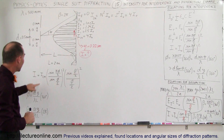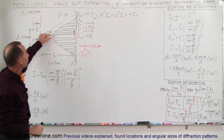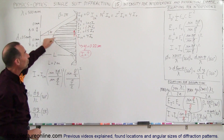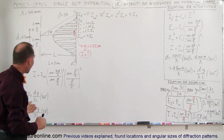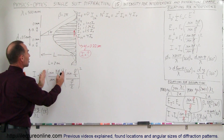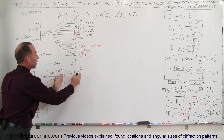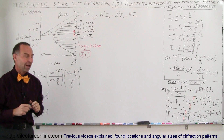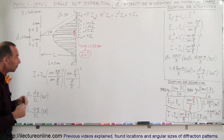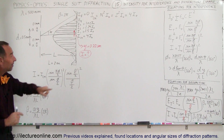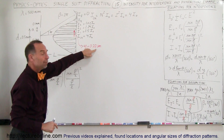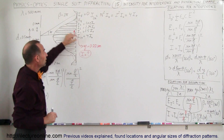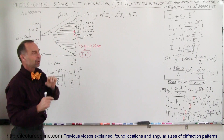To find the intensity at any location, you take the intensity of the central maximum, which for two slits equals four times the intensity of a single beam, multiplied by the fraction caused by the interference and the fraction caused by the diffraction. Here we're going to find the intensity at the location 0.22 centimeters, or 2.2 millimeters, away from the central maximum.